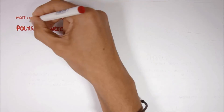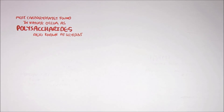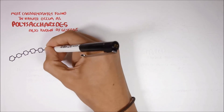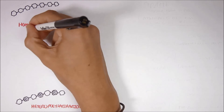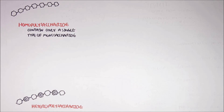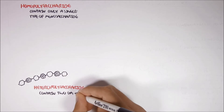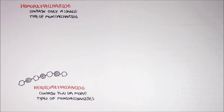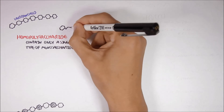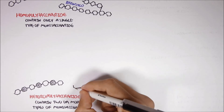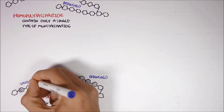Most carbohydrates found in nature occur as polysaccharides, also known as glycans. Polysaccharides can be a homopolysaccharide or a heteropolysaccharide. A homopolysaccharide contains only a single type of monosaccharide — for example, only glucose molecules linked together. A heteropolysaccharide contains two or more different monosaccharides, such as a long chain of fructose and glucose. A polysaccharide can also be unbranched or branched, and this goes for both homopolysaccharides as well as heteropolysaccharides.